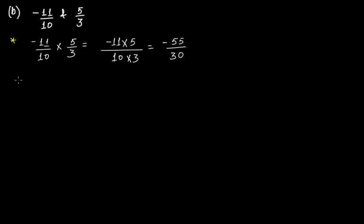Now let's do 5/3 times -11/10. So the numerators together 5 times -11, and 3 into 10, you get -55 over 30.